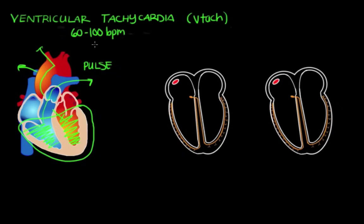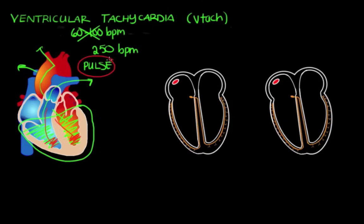In VTAC, the heart is beating really fast — sometimes up to 250 beats per minute. This is so fast that the heart has a hard time circulating enough blood to the rest of the body. It might seem counterintuitive, but remember: the heart fills between beats. At 250 beats per minute, there's very little time for filling, which decreases blood circulation. Sometimes circulation is so poor that you don't feel a pulse, because the walls are beating so fast and sometimes even weakly.